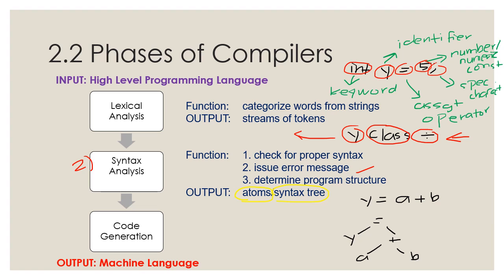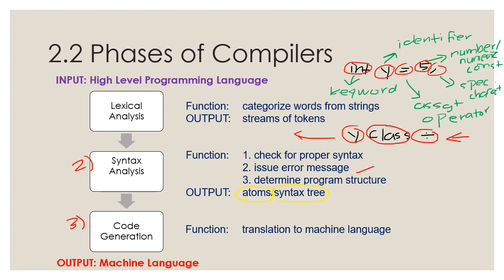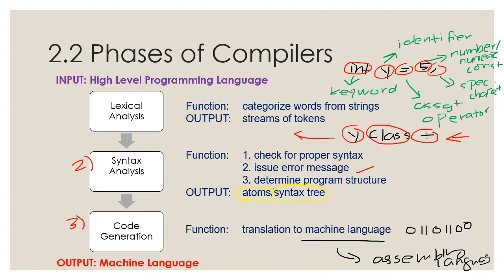The output of syntax analysis becomes the input of the third phase — code generation. In the code generation phase, it simply translates the structure of the program, either in the form of atoms or syntax tree, into machine language. In our particular syllabus, we will be using assembly language. This output will then be able to run on the targeted machine or architecture.